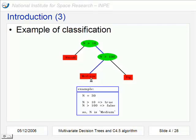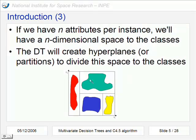If we have N attributes, in this case we have two attributes, we will have an N-dimensional space, in this case a two-dimensional space, where the classes can be. And the DT will create hyperplanes or partitions that are these lines here to divide the space to the classes.